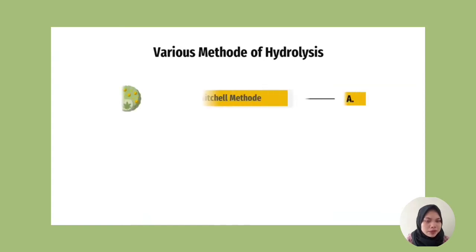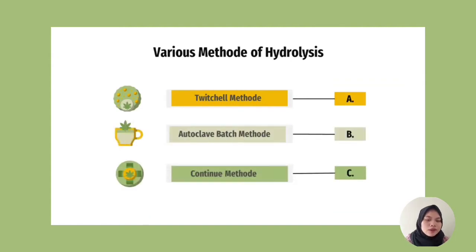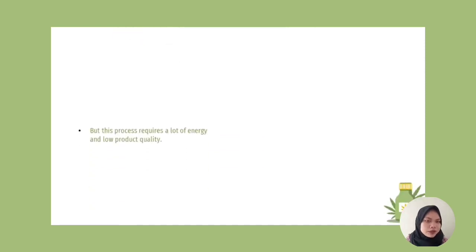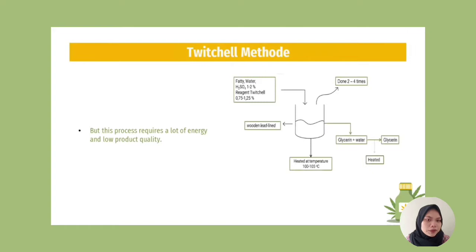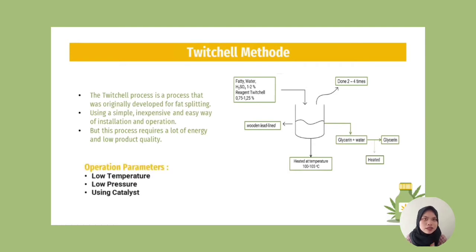The first method is the Twitchell method. The Twitchell process was originally developed for fat splitting. This process uses a simple, inexpensive, and easy way of installation and operation, but it requires a lot of energy and the product is of low quality. Operating this process requires three parameters: low temperature, low pressure, and the use of a catalyst — specifically Twitchell reagent or sulfuric acid.